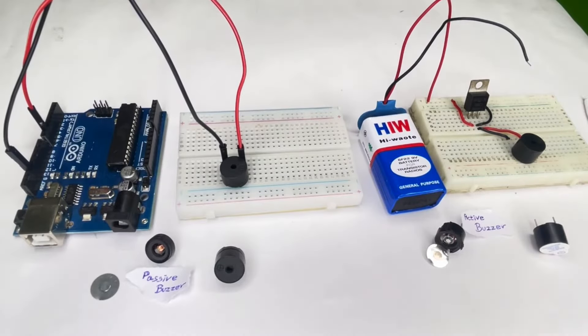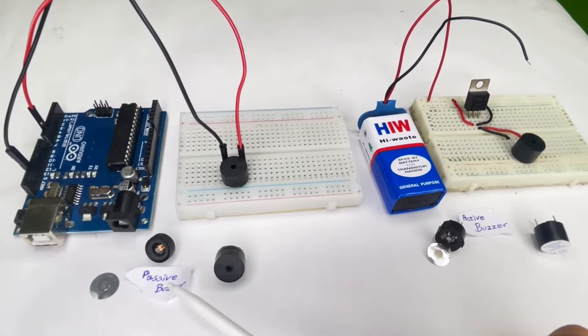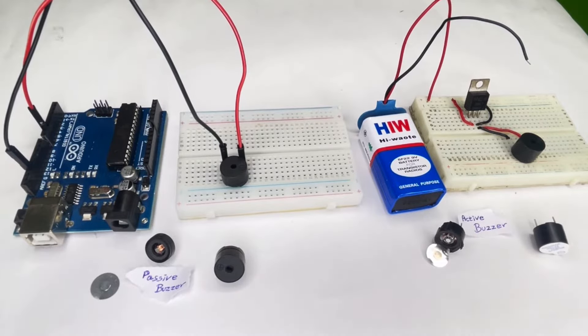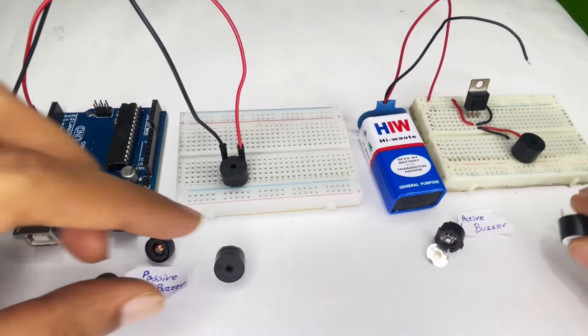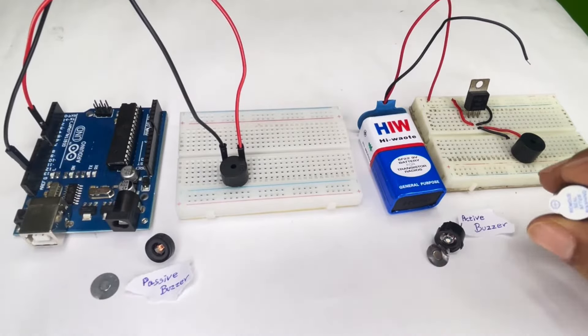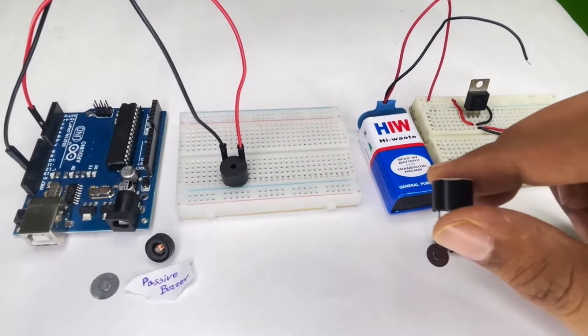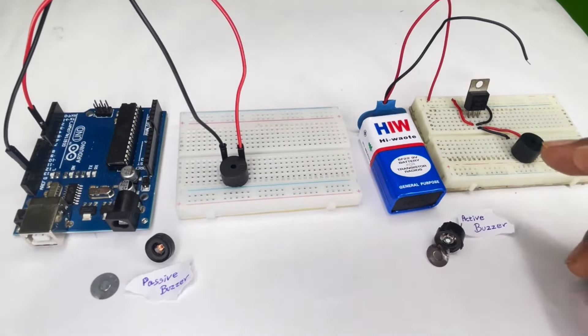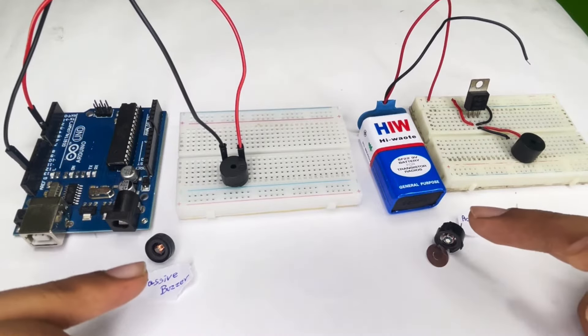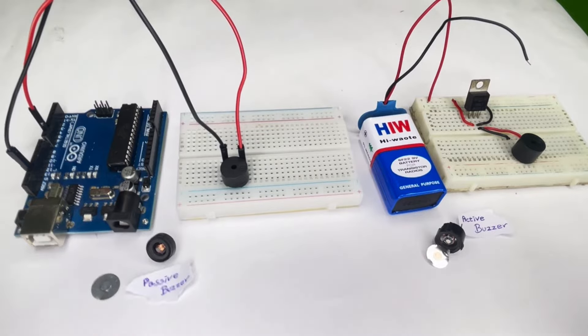Hey people, welcome back to another video of Circuit Digest. In this video we're going to tell you the difference between passive buzzer and active buzzer. Most of these buzzers look exactly the same, so we're going to show you how to physically differentiate between an active buzzer and a passive buzzer just by looking at it, and also how to use both of them in a circuitry and check if they're working, and show you what's inside a passive buzzer and what's inside an active buzzer.